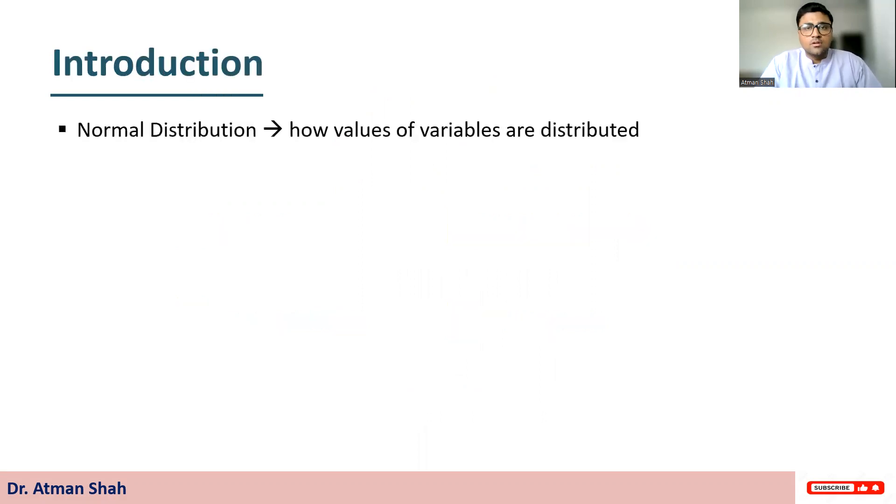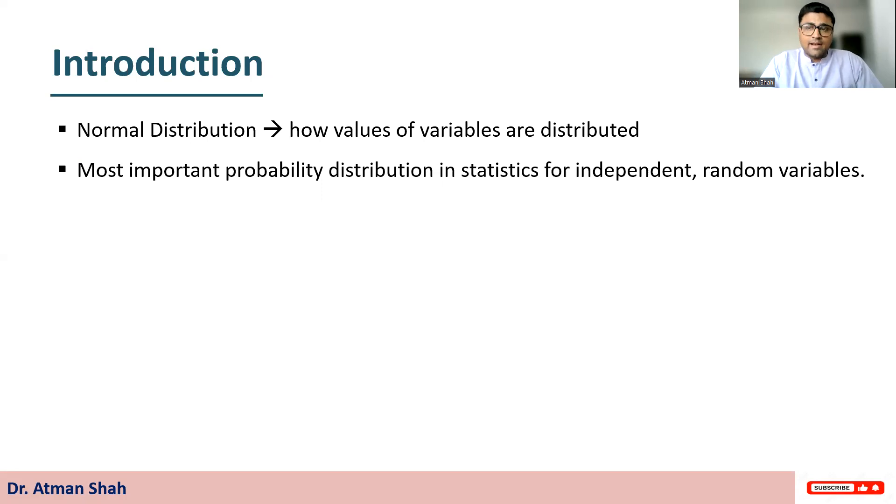Let's begin with the introduction. Normal distribution tells us about how values of variables are distributed. So normal distribution is most important probability distribution in statistics for independent and random variables.